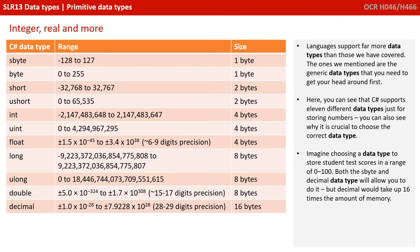You could store that score in the sbyte data type, but you could also store it in the decimal data type. The difference is that the decimal data type would take up 16 times the amount of memory to store that value, when it absolutely isn't needed.